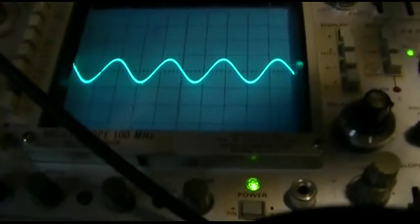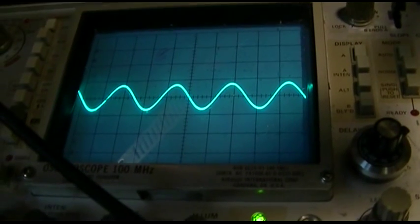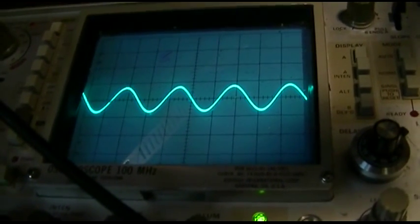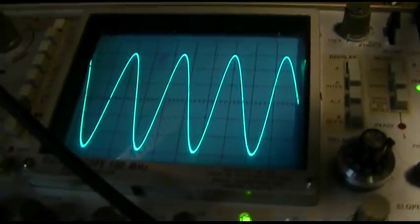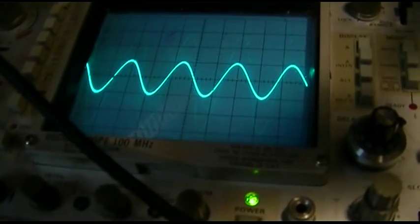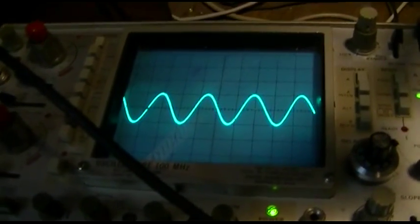So we got 460 dialed up here and we're not going through the transformer yet. This is one volt per division, or no, two volts per division, so we're about four volts. That's the next step up. So we'll connect and go through the transformer.